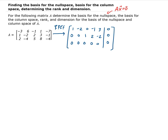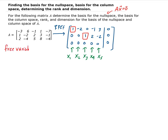Just recall that this is for X1, X2, X3, X4, and X5. We have a pivot in the first column and a pivot in the third column. Those are going to correspond to our basic variables. For the free variables, those are going to be X2, X4, and X5. And for our basic variables, we have X1 and X3.